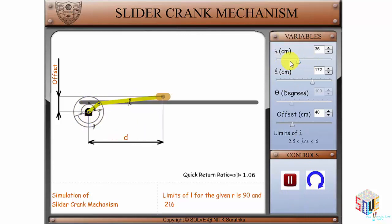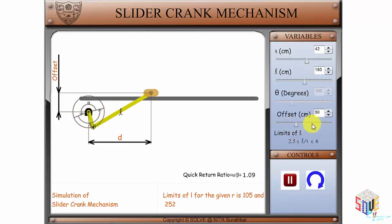By moving the slider, you can vary the radius, length, and the offset distance, and corresponding changes can be seen in the animation.